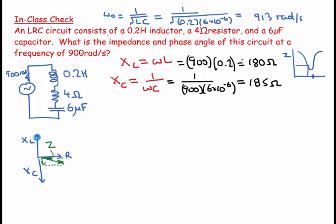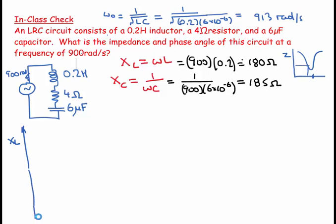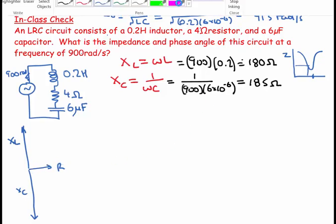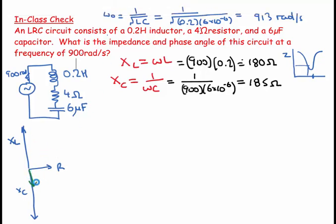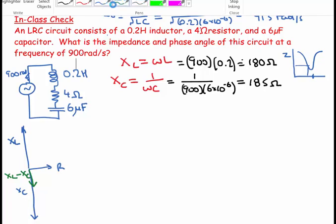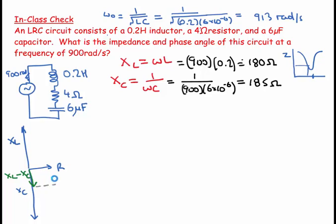The XL vector is 180 ohms long and the XC vector is 185 ohms long. Drawing the phasor diagram: XL goes up, XC is slightly longer going down, and R is the resistance value. Summing XL and XC vertically gives XL minus XC, and the vector sum of that with R gives Z and the phase angle.